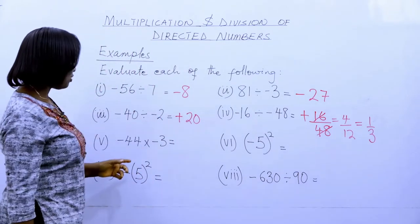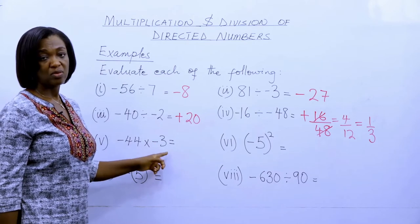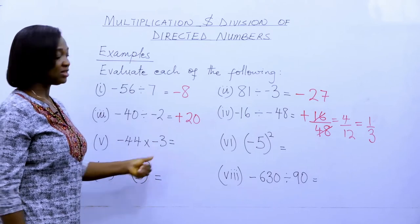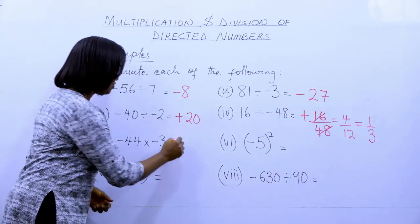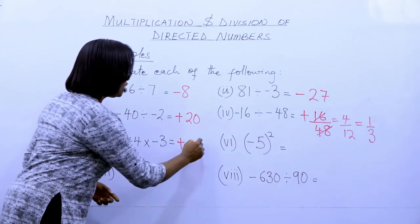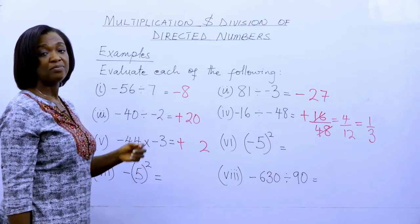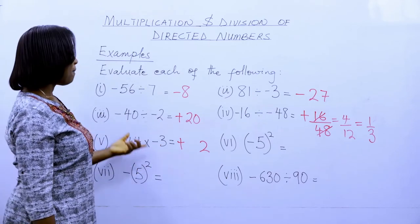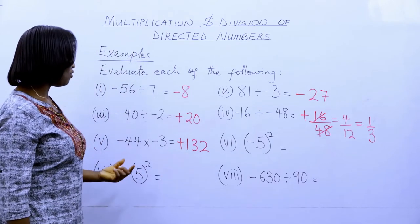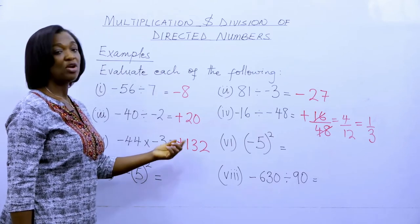Minus forty-four times minus three: minus times minus is positive. Three times forty-four — three times four is twelve, carry one; three times four again is twelve, plus one is thirteen. So minus forty-four times minus three is plus one hundred and thirty-two.